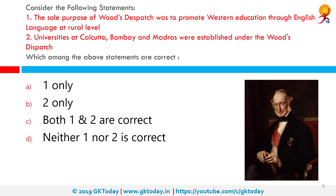Consider the following statements. Number one: the sole purpose of Wood's Dispatch was to promote Western education through English language at rural level. Number two: universities at Calcutta, Bombay, and Madras were established under Wood's Dispatch. Which among the following statements are correct? Only statement two is correct. In 1854, Wood sent a dispatch to Lord Dalhousie, the then Governor General of India. Wood suggested that primary schools must adopt vernacular languages, high schools must adopt Anglo-vernacular language, and at college level, English medium should be used for education. So it was not specifically for Western education at rural level.